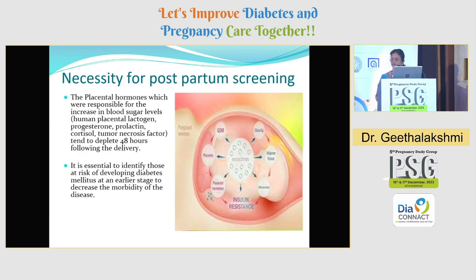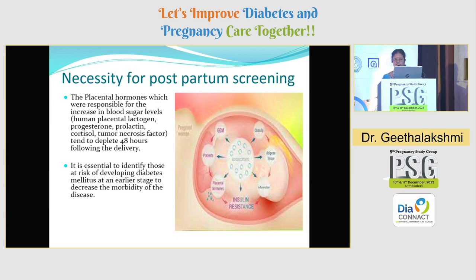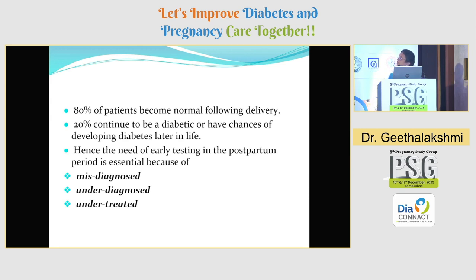Why do we need postpartum screening? The placental hormones responsible for increased blood sugar — human placental lactogen, progesterone, prolactin, cortisol, and tumor necrosis factor — deplete within 48 hours following delivery. It is essential to identify those at risk of developing diabetes at an earlier stage to decrease morbidity. 80% of patients become normal following delivery, but 20% continue to be diabetic or have chances of developing diabetes later in life. Hence, early testing in the postpartum period is essential to avoid misdiagnosis, underdiagnosis, or undertreatment.